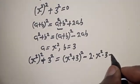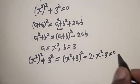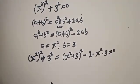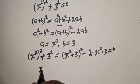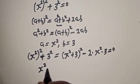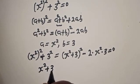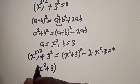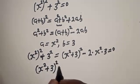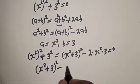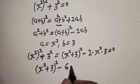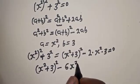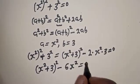So x squared squared plus 3 squared will equal x squared plus 3 squared minus 2 times x squared times 3. Everything is set equal to zero, so this becomes x squared plus 3 squared minus 2 times 3 times x squared equal to zero.